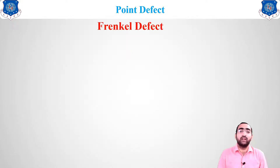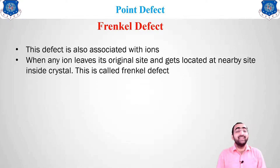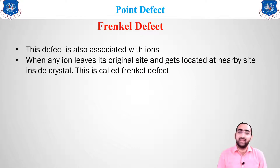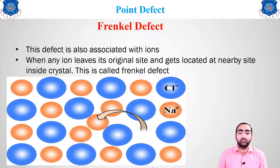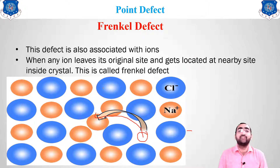The last point defect is the Frenkel defect, also associated with ions. When any ion leaves its position but settles down somewhere else inside the crystal only — not going outside the crystal — that type of defect is known as a Frenkel defect. For example, a sodium atom leaves its position and settles at another space within the crystal. Schottky and Frenkel are the two types of defects occurring due to ions.